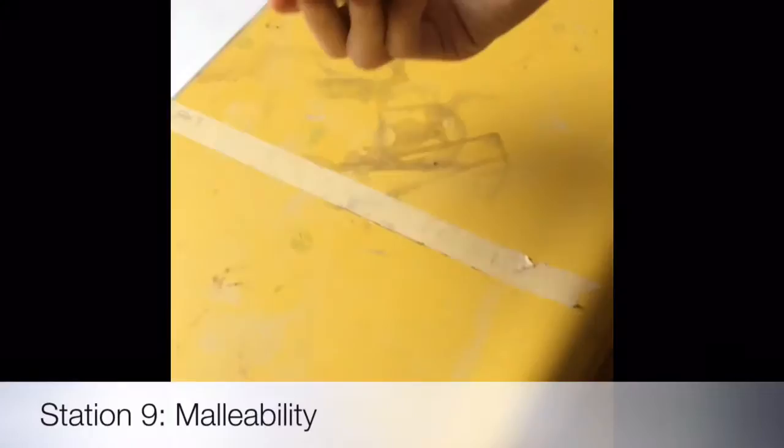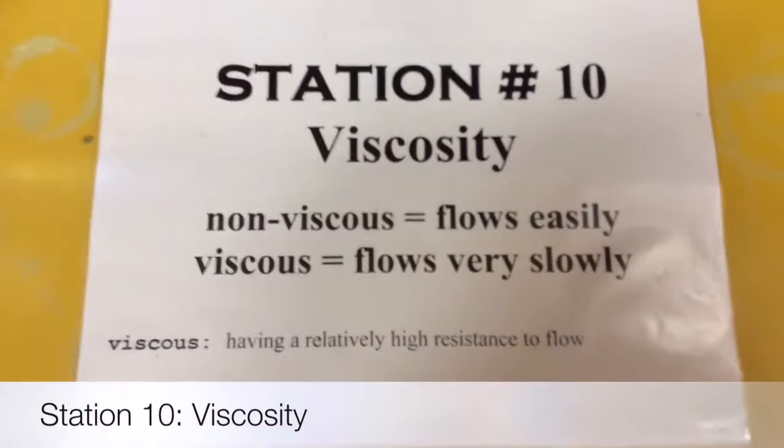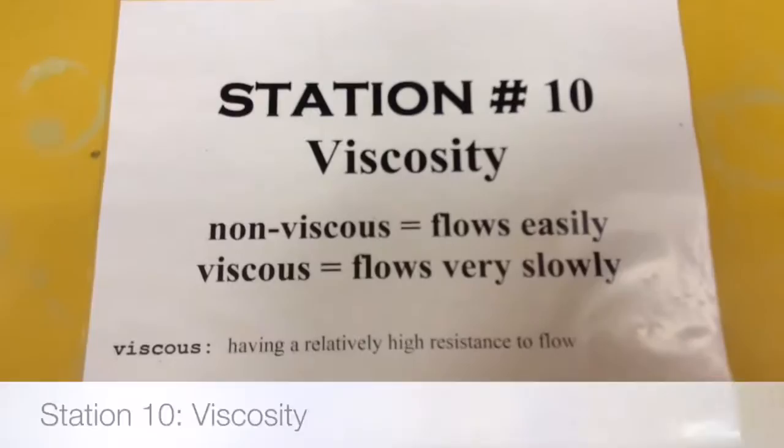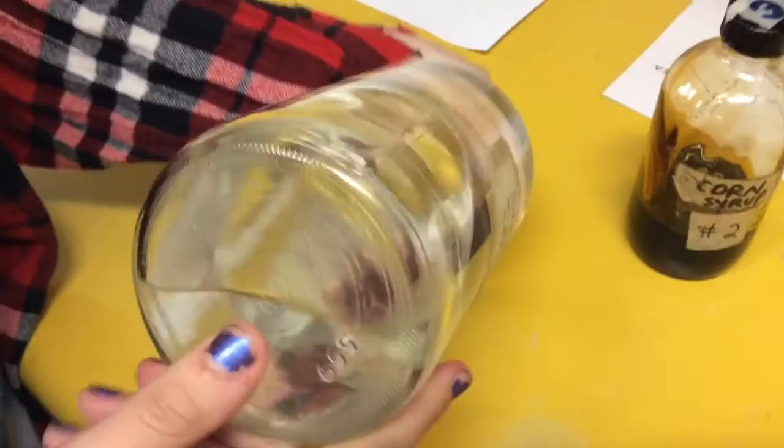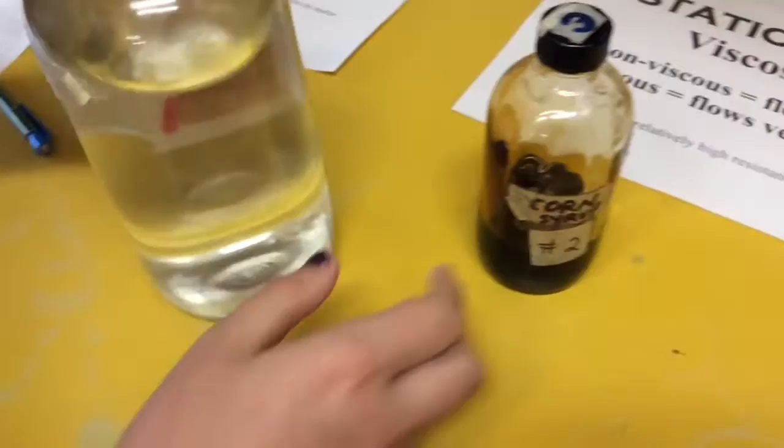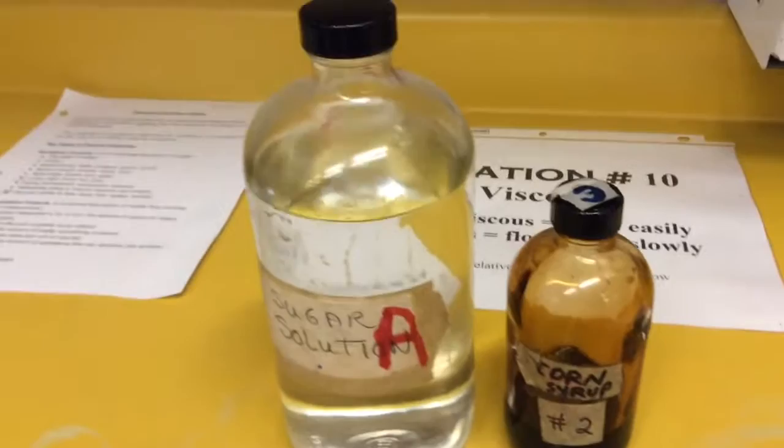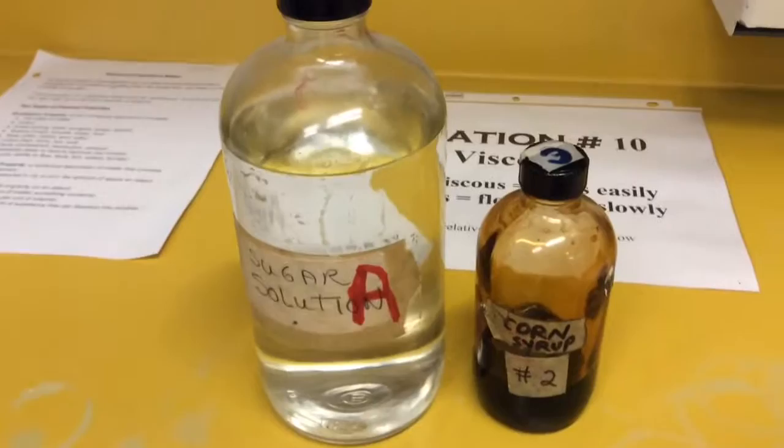The property we chose was viscosity, which is how easily or not easily a substance flows. It is a qualitative property because we're not dealing with numbers in this case. The sugar solution is an example of a non-viscous substance because it flows very easily. The corn syrup is a viscous substance because it flows very slowly. Another example of a viscous substance is molasses, and another example of a non-viscous substance is water.